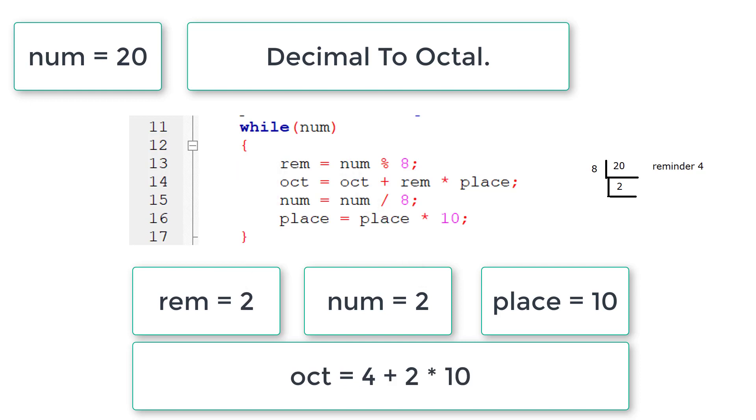Now the while loop. So remainder becomes 2, octal becomes 24. Number equals num divided by 8. Num becomes 0. Place equals place times 10, place becomes 100. Now while loop, num equals 0, so while loop exits. So the octal equivalent of decimal 20 is 24.